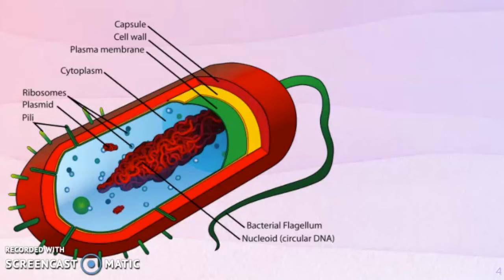All prokaryotes have ribosomes, a cell membrane, and a cell wall. There are also some other structures present in some prokaryotic cells but not all of them, such as the flagellum, the capsule, and cilia or pili.